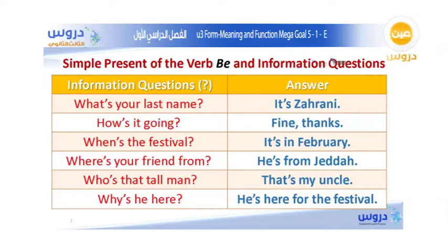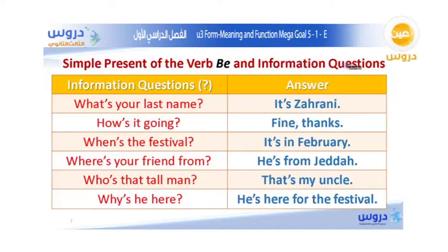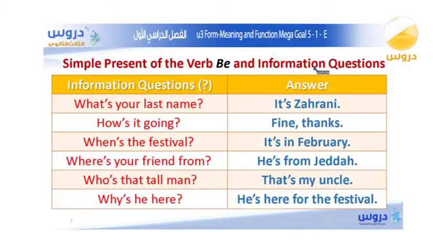Information questions are those kinds of questions that start with what, when, how, where, who, and why. They also have another name, which is the WH-question.